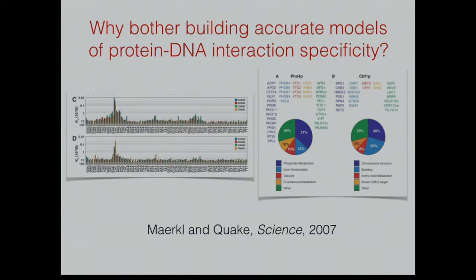That's what's motivated a lot of our research — to try and capture these subtle but important functional differences between close paralogs of transcription factors from the same family, by doing rigorous modeling of the high-throughput data, so we can actually capture those functional differences just in terms of the in vitro binding specificity of those factors.